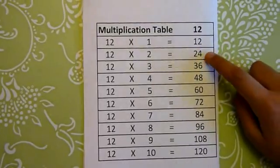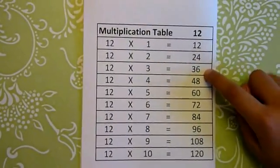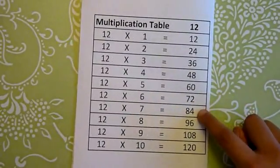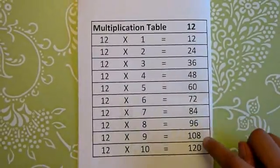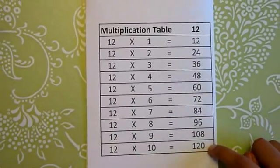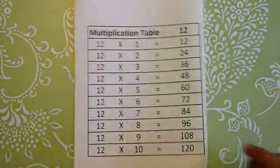12 1s are 12, 12 2s are 24, 12 3s are 36, 12 4s are 48, 12 5s are 60, 12 6s are 72, 12 7s are 84, 12 8s are 96, 12 9s are 108, 12 10s are 120. Now we'll go on to multiplication table 13.